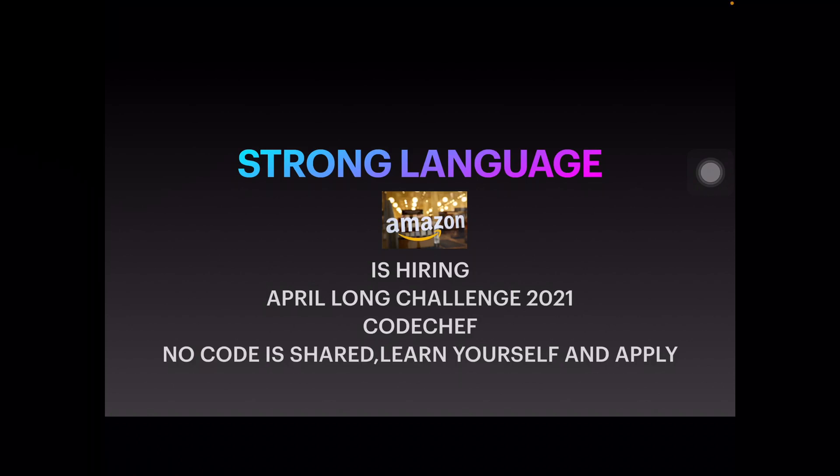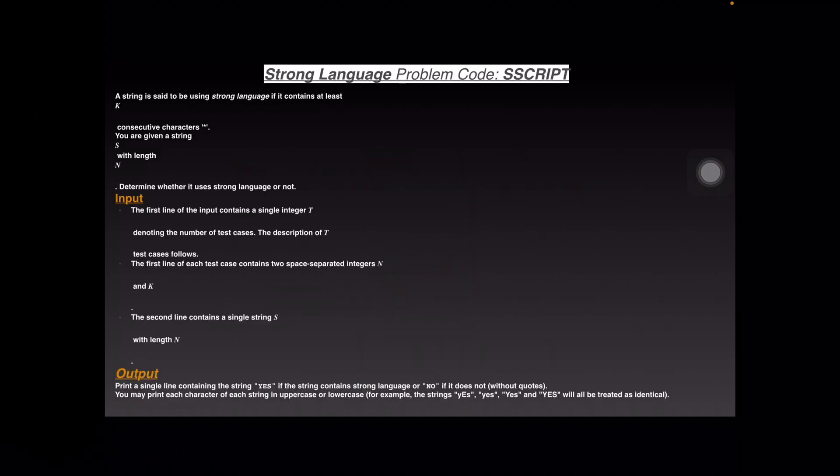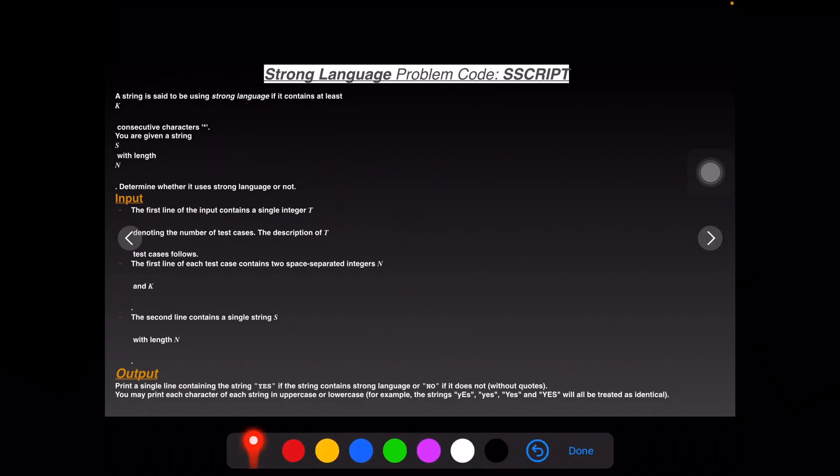Let's understand and you are the one who are gonna apply it and solve it. Strong language is a question that arrived. Now the string is said to be using a strong language if it contains at least k consecutive star characters. The ASCII value of star in decimal is 42.